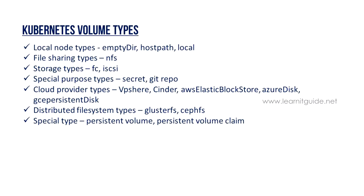You can use different volume types. For local node types, you can use emptyDir and hostPath. For file sharing, you can use NFS. For storage types, you can use FC and iSCSI. For special purpose types, you can use Secret. For cloud providers, you can mount vSphere, Cinder, AWS, Azure, GCE. For distributed file systems, there is GlusterFS and CephFS. There is also Persistent Volume and Persistent Volume Claim as a special type, which we will cover in the next session.